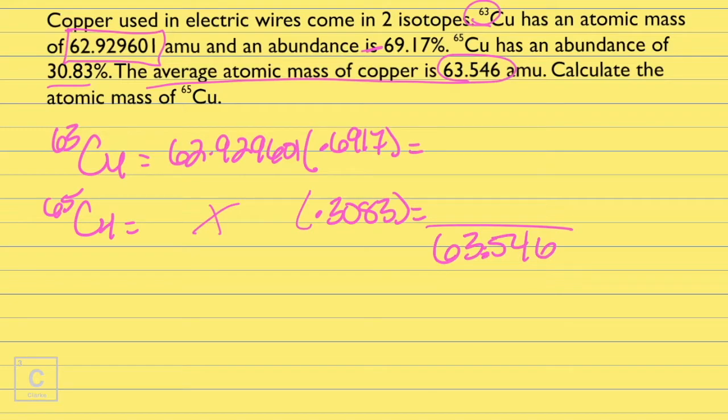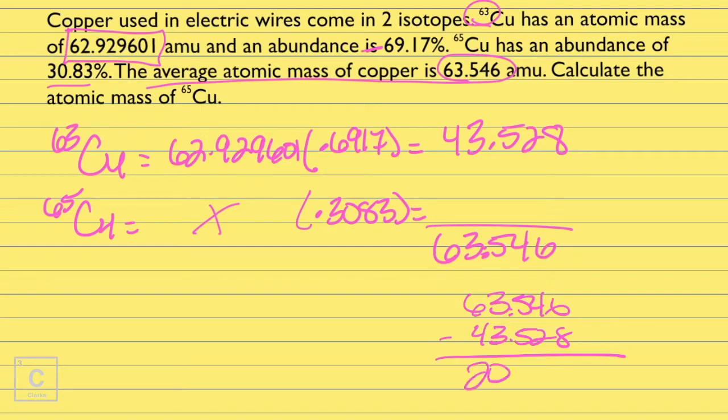Okay, I'm going to put this in the calculator because that is definitely where I need to start. 62.929601 times 0.6917. I'm getting 43.528. Now, I can't do my next problem because I have X there. But remember, we know that the average atomic mass is the sum of these two parts. We have one of the parts, so we could just subtract. So if we take our 63.546 and subtract 43.528, I am definitely putting that in the calculator. And I'm getting 20.018.